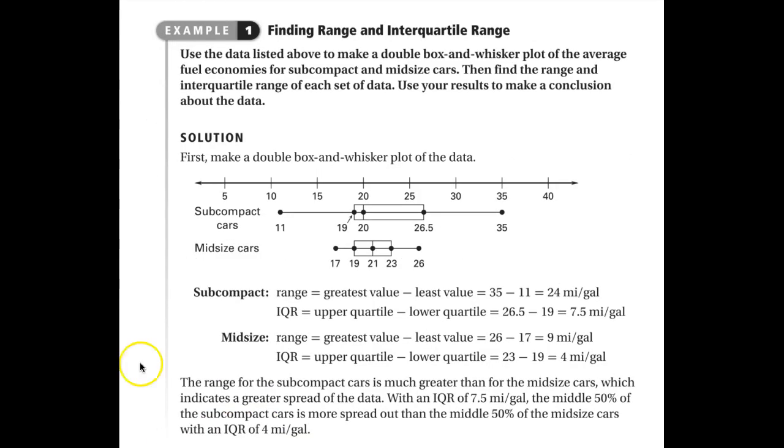So here is an example. A double box and whisker plot was made of that data above, and here's the box and whisker plot for subcompacts and for midsize cars.